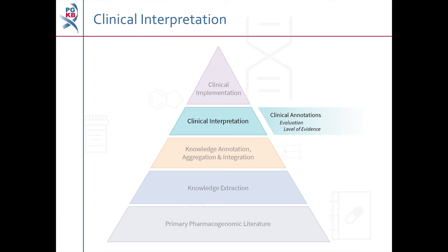The fourth layer of the pyramid, clinical interpretation, is formed from the information that is available in PharmGKB through knowledge annotation, aggregation and integration. PharmGKB scientific curators review all variant annotations pertaining to an association between a particular genetic variant and drug, and then aggregate these to produce a summary of this association. These summaries are our clinical annotations and are written in a clear, standardised format that is understandable to clinicians and researchers.